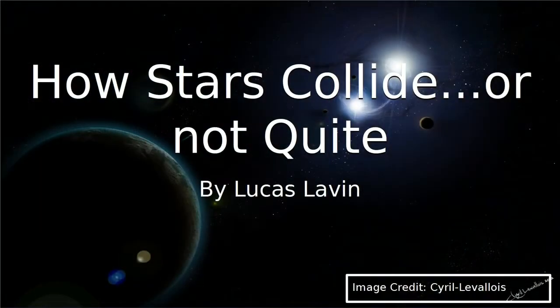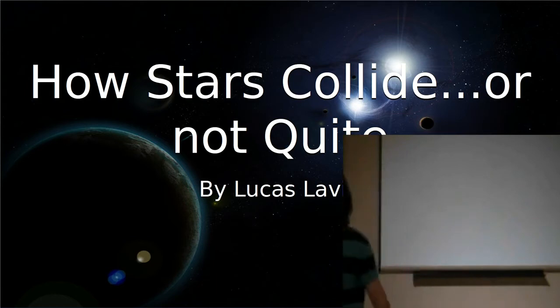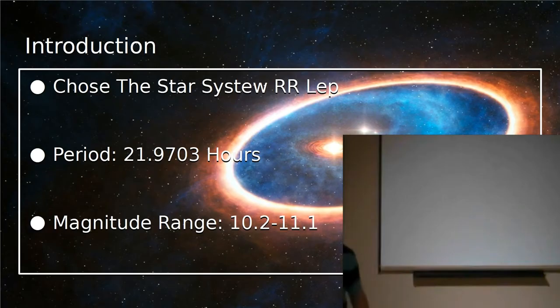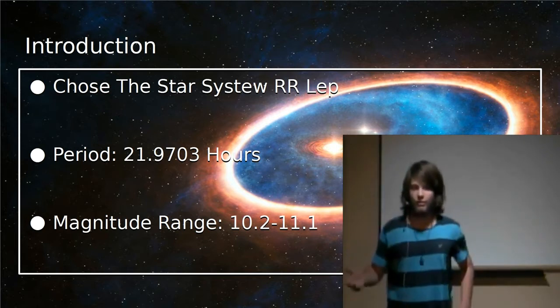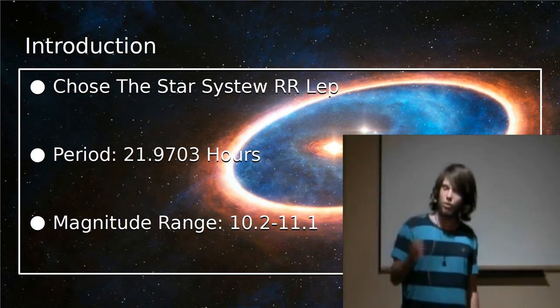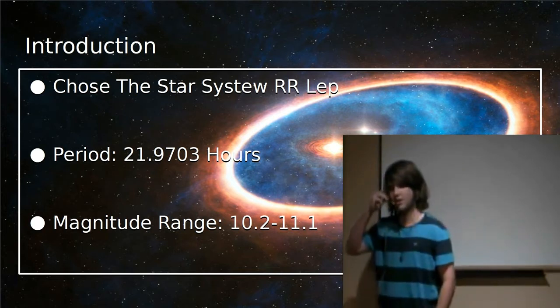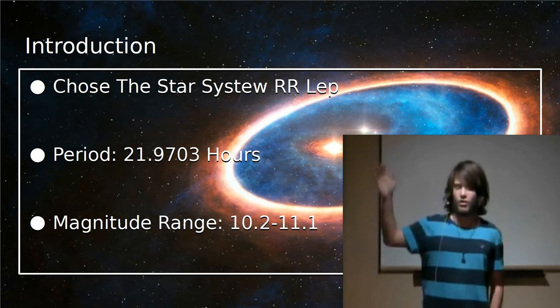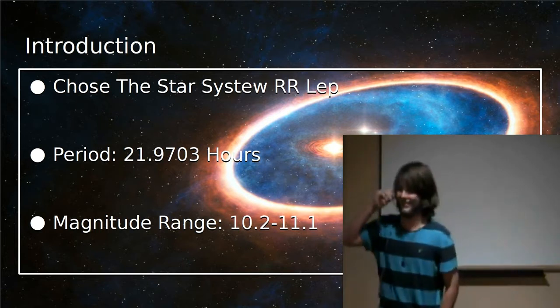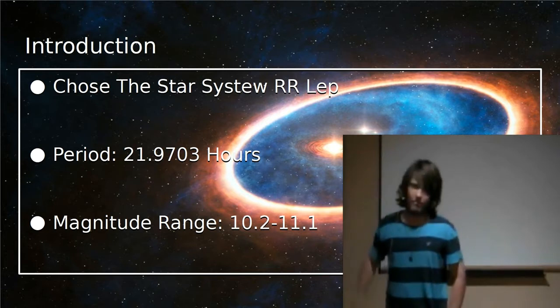Okay, so my name's Lucas Lavin, and my project that I've been doing, I have named How Stars Collide, but Not Quite. So I chose to observe a binary star system. Now, for fun fact you all might not know, but two-thirds of all the points in the sky are actually a binary star system. So that means two-thirds of every single star you'll see has two stars in it, not really one.